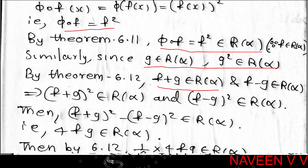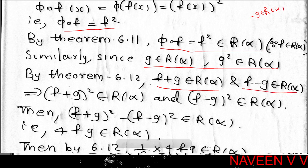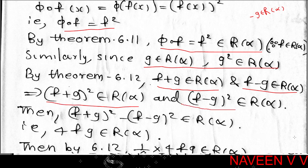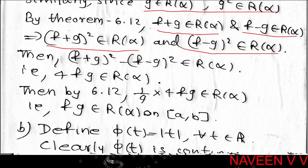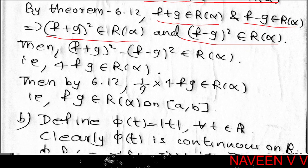By Theorem 6.12, f belongs to R(α) implies c·f belongs to R(α) for any constant c. Choosing c = -1, we get -f belongs to R(α), so f - g belongs to R(α). Thus both f + g and f - g belong to R(α). Since products of R(α) functions remain in R(α), (f+g)² and (f-g)² both belong to R(α).